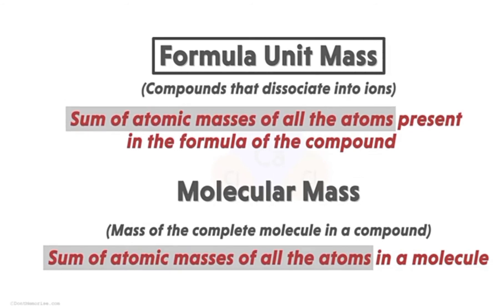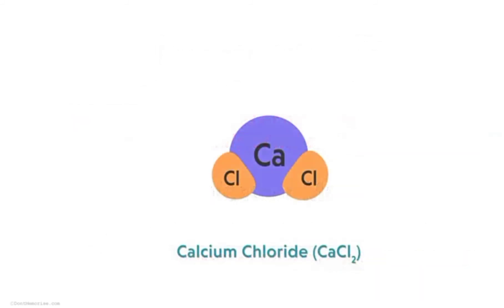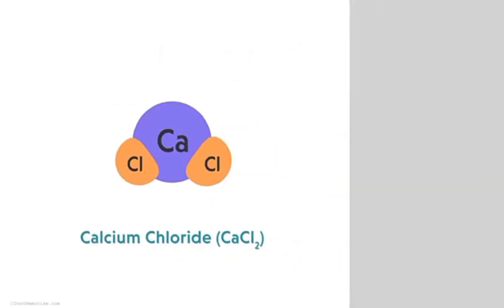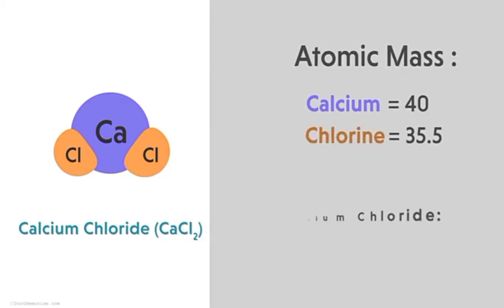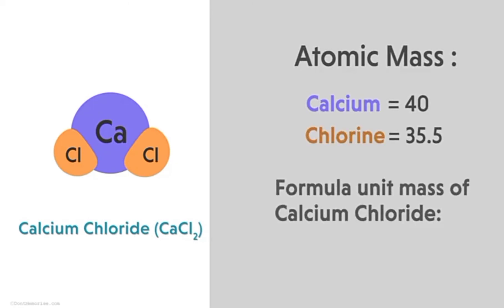For calcium chloride, the atomic mass of calcium is 40 and chlorine is 35.5. So the formula unit mass is 40 plus 2 times 35.5, which equals 111 units.